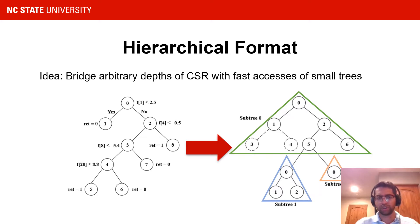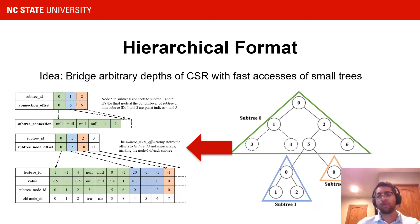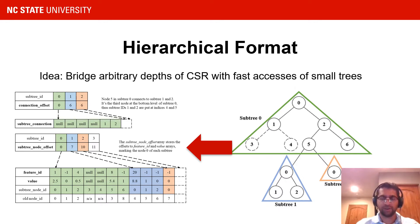Decision trees in the hierarchical format are represented by five arrays: connection offset, subtree connection, subtree node offset, feature ID, and value. Feature ID and value store node attributes, with nodes renumbered according to their breadth-first search position in the subtree, and nodes of a subtree are laid out contiguously in memory. Connection offset points to the location in the subtree connection array where a given subtree's connections begin. The subtree connection array associates leaf nodes with the next subtree to traverse to. Finally, the subtree node offset marks the starting index of node attributes for a given subtree.